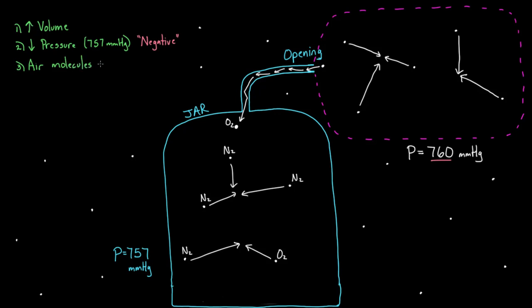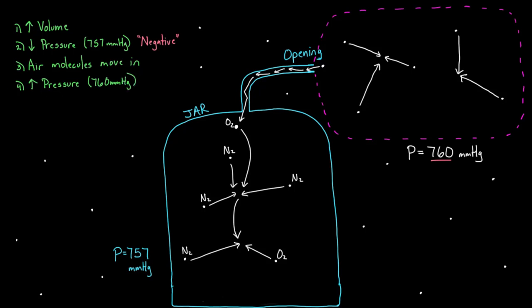These molecules are now going to do what molecules do, which is kind of bounce off of each other. So they start bouncing off of each other — this one collides over here, some bouncing, this collides over here. Now you've got six molecules on the inside and kind of the same volume, so the pressure on the inside has gone up. Pressure has gone up on the inside of the jar simply because there are more molecules in there now. So even though you had more volume initially, you've kind of filled it up with more molecules, and the pressure goes up to 760 millimeters of mercury. So now it's gone back up — this is my new pressure.